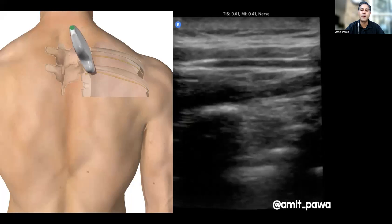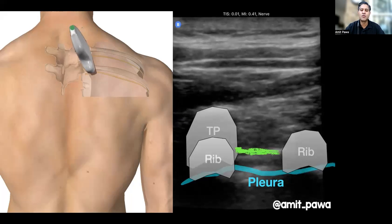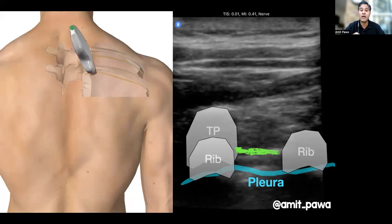I've slightly obliqued the caudal part of the probe, and you can appreciate the shadow of the transverse process with an underlying rib. On the right-hand side, the lower shadow of the rib — you can see the superior costo-transverse ligament, the pleura, and the space between them is the paravertebral space.